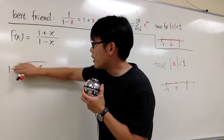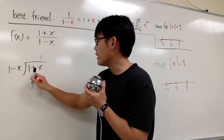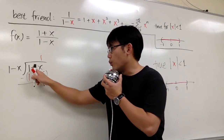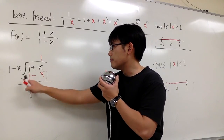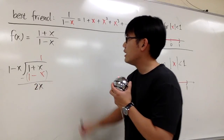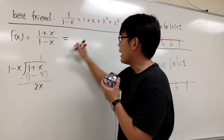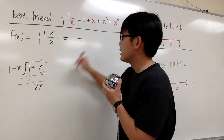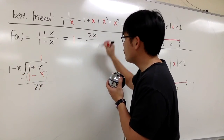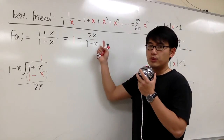We just compute the first term; we need to have the 1. So we put the 1 right here: 1 times 1 is 1, 1 times negative x is negative x, and we go ahead and subtract. 1 minus 1 is 0, but x minus negative x is 2x. This is positive 2x. So by doing long division, we know that this is equivalent to 1 plus 2x over the denominator, which is 2x over 1 minus x. This is much easier to work with.